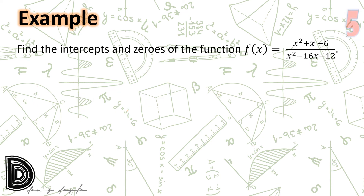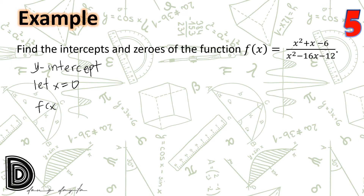Let us have example number 5: find the intercepts and zeros of the function f(x) = (x²+x−6) / (x²−16x−12). Let us start by finding the y-intercept. We let x equal zero. Substituting, we have f(x) = (0²+0−6) / (0²−16×0−12) = −6/−12 = 1/2. Hence, the y-intercept of this rational function is at (0, 1/2).